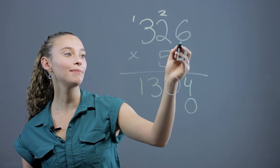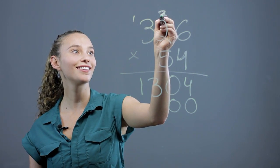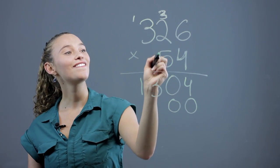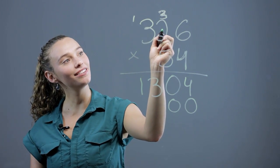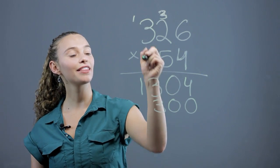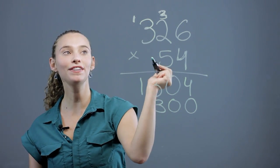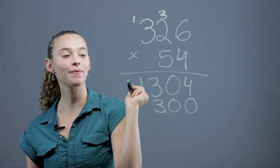Now we do 5 times 6 is 30. Again, carry the 3. I'll change this 2 into a 3. 5 times 2 is 10, plus 3 is 13. Carry the 1. Perfect, we already have a 1 here. 5 times 3 is 15, plus 1 is 16.